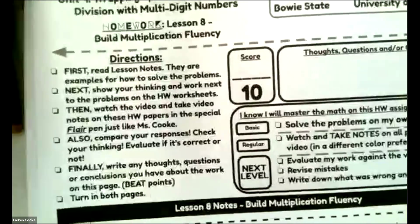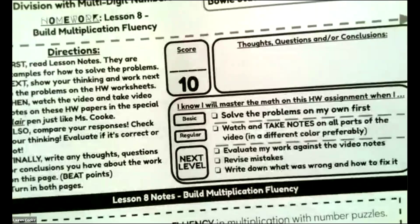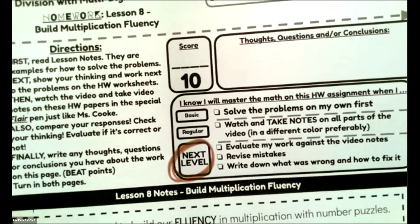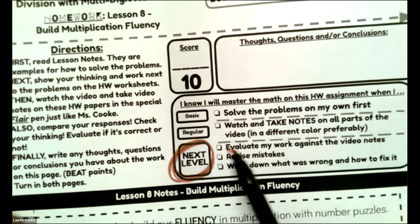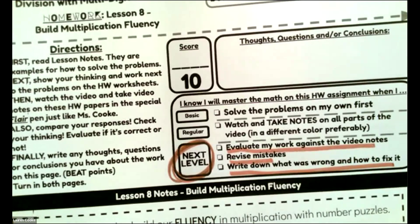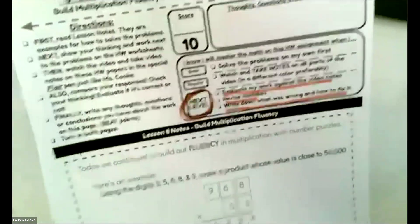All right. So let's get started on today's homework. We are working on building fluency continually. And we played a game today in class where it was like build the biggest number. I'm going to do a little bit of that for homework too, based on place value. And I'm hoping that we are all at the next level for our homework, evaluating your work against the notes, revising your mistakes and writing down what was wrong, how to fix it. Feel free to add any papers you want to the homework. The more thinking you do, the stronger your muscles, your brain muscles are.